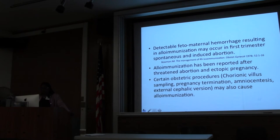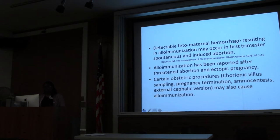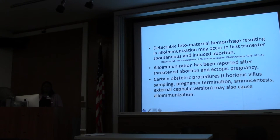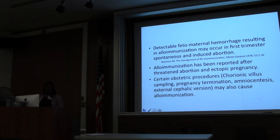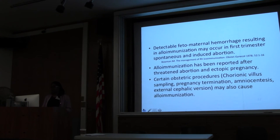Allo-immunization may occur in the first trimester with spontaneous and induced abortion. When women are obtaining voluntary terminations of pregnancy, it is routine to screen for blood type, and if they are RH-negative to administer RhoGAM at that point, irrespective of gestational age. Allo-immunization has also been reported after threatened abortion and ectopic pregnancy. When obstetric procedures such as CVS — typically done prior to 13 weeks — pregnancy terminations, amniocentesis at 16 to 22 weeks, or even external cephalic versions are performed, those may also cause allo-immunization and we would administer RhoGAM.